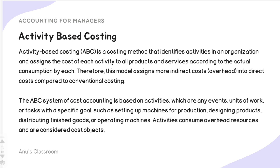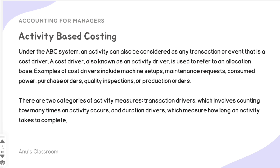ABC, or activity based costing, is a costing method that identifies all the activities in an organization and assigns the cost of each activity to all products and services according to actual consumption by each. This model assigns more indirect or overhead costs into direct costs compared to conventional costing. Any event, unit of work, or task with a specific goal — such as setting up machines for production, designing products, distributing finished goods, or operating machines — has its cost assigned to the corresponding cost objects.